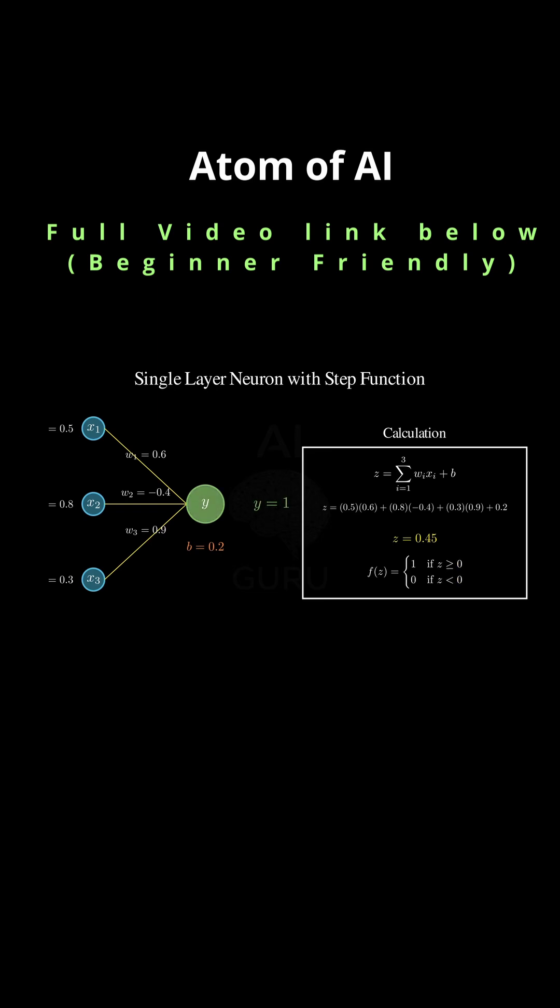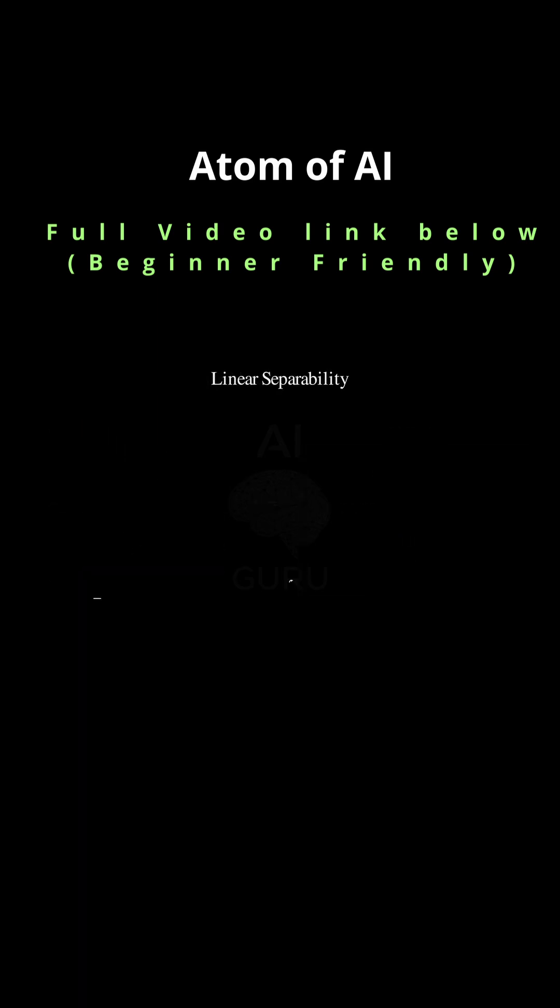Precisely. The output is a simple binary choice. One, if that weighted sum goes over the threshold, and zero if it doesn't. Geometrically, that's just a straight line, a single straight line, or a flat plane, a hyperplane in higher dimensions, it just divides the input space in two.